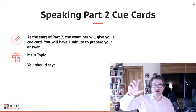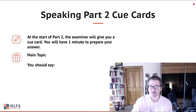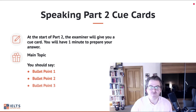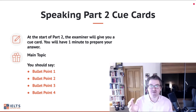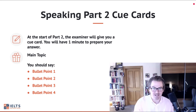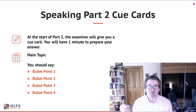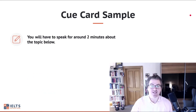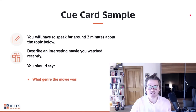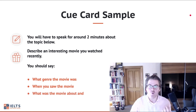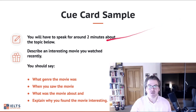At the top of every cue card there is a main topic — this never changes. Below that it says 'you should say' — again, this never changes — and then there will be four bullet points, which also never change. This is a gift to us because if parts of the IELTS test never change, we can give examiners exactly what they're looking for. For example: 'Describe an interesting movie you watched recently. You should say: what genre the movie was, when you saw the movie, what the movie was about, and explain why you find it interesting.'